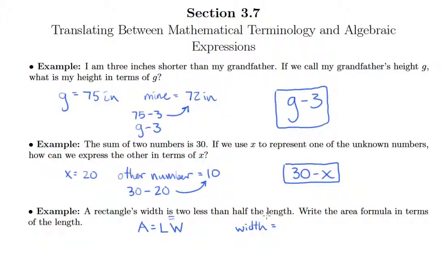When you take half the length, we understand that's one half times the length L. And then we're taking two less than that, so we're subtracting two.